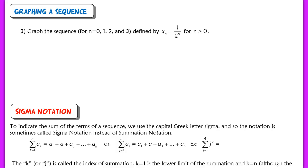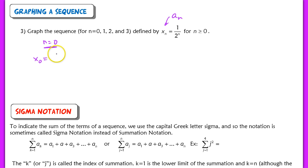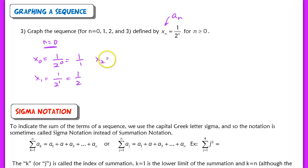In your homework you'll also be asked to graph a sequence. Remember, a sequence is just like a function. Here we're graphing the sequence x sub n equals 1 over 2 to the n, for n greater than or equal to 0. Starting at n equals 0: x sub 0 equals 1 over 2 to the 0, or 1. x sub 1 equals one half. x sub 2 equals one fourth. x sub 3 equals one eighth.